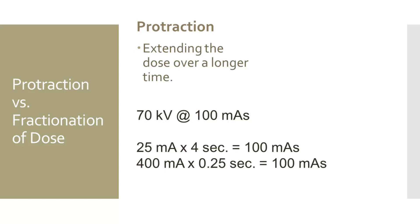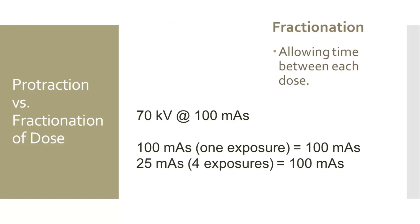However, 70 KV at 400 MA and 0.25 seconds would be more commonly used in practice because it reduces the chance of patient motion during the shortened exposure. For fractionation, performing an exposure at 70 KV at 100 mAs all at once is more harmful than four separate doses at 70 KV at 25 mAs each. The total exposure would be the same 100 mAs, but allowing more time between exposures enables cellular repair and results in less biological harm.